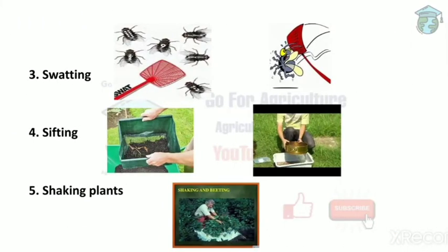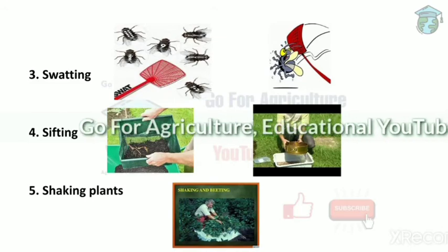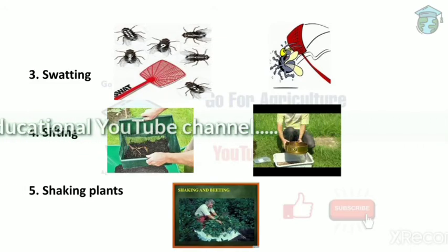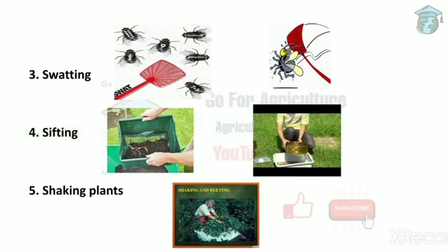Next is swatting — beating insects with a swat to kill them. Next is sifting: we use a sifting material to separate soil and insects. We collect a handful of soil, place it into the sifting material, and shake it so that soil and insects are separated. The collected insects can then be killed.